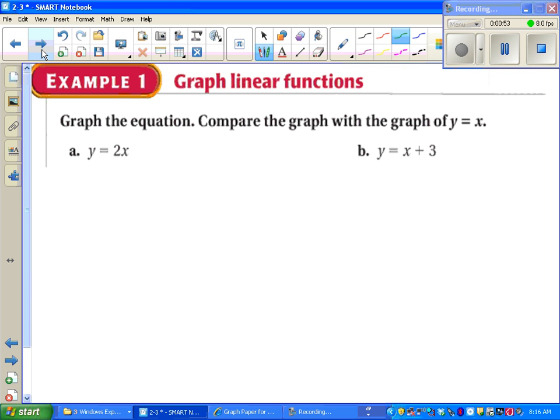So we're told to graph the equation and compare it with the graph of y equals x. So I'd start with my y-intercept at zero, and my slope is two, which is really two over one. And because my slope is a bigger positive number, I should be able to say that this is steeper than the graph of y equals x. And I could write that in words if I was asked to explain.